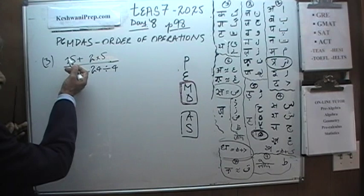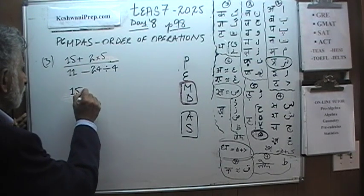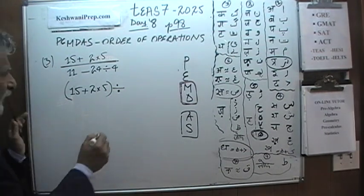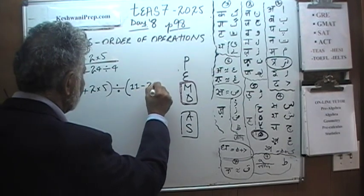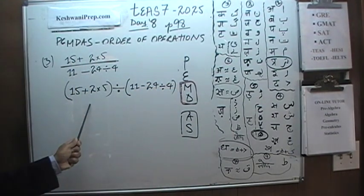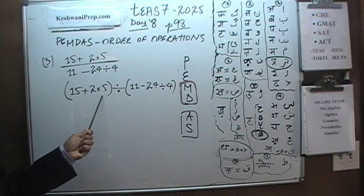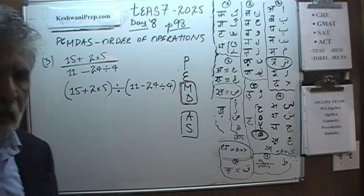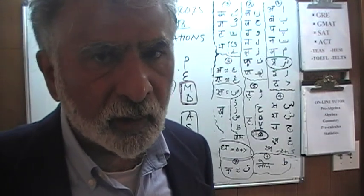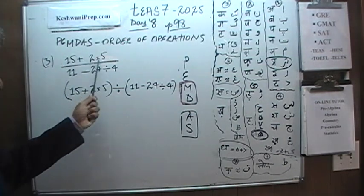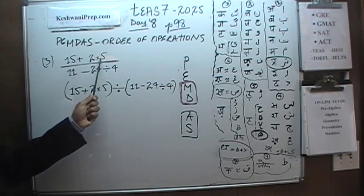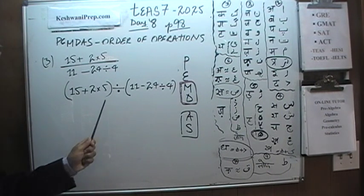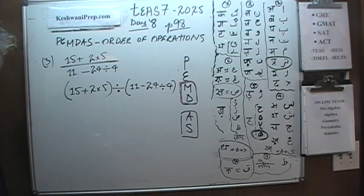Exact same problem — the top part, the numerator, is 15 plus 2 times 5. That fraction sign simply means divide. Then the bottom part — 11 minus 24 divided by 4. When a problem is presented as a fraction with a whole expression on top and bottom, we treat the numerator and denominator as two separate quantities — just like we would treat content inside parentheses. We take care of the top separately, then the bottom separately.